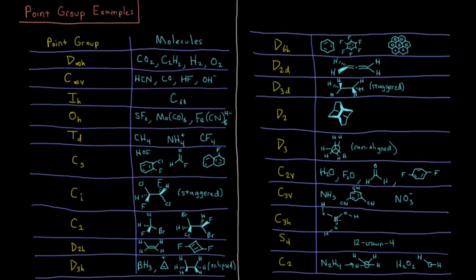C3H, something like boric acid, these are all in a plane, but notice how they have a curvature to them in the plane, so they don't have those mirror planes. The only plane they have is the plane that they all lie in.